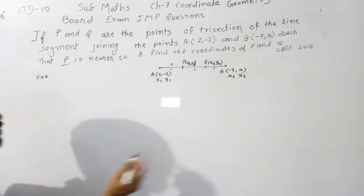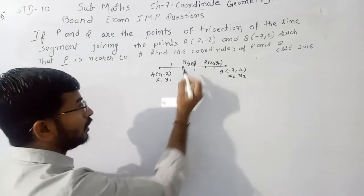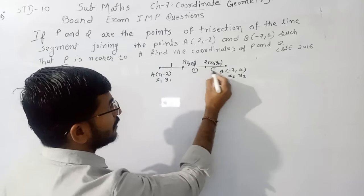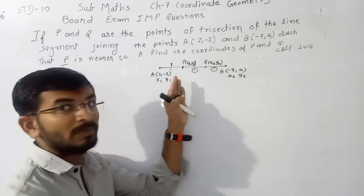Now for point P, point P divide the line segment 1 ratio 1 plus 1, that is 2, externally.